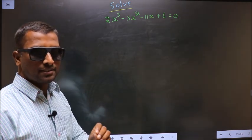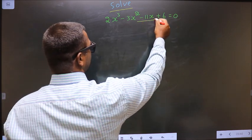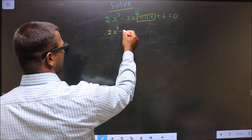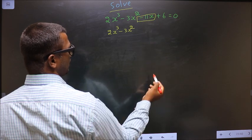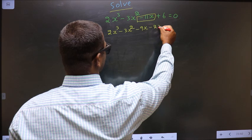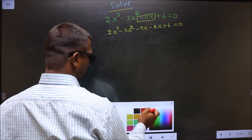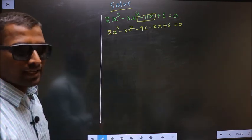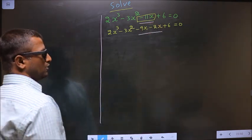For that you should change the x term, that is minus 11x. So 2x³ - 3x². In place of minus 11x you write minus 9x minus 2x plus 6 equal to 0. In place of minus 11x I have written minus 9x minus 2x.